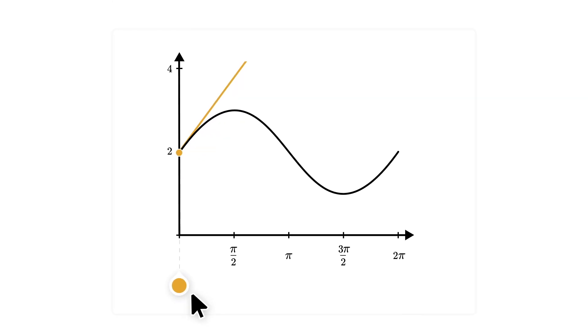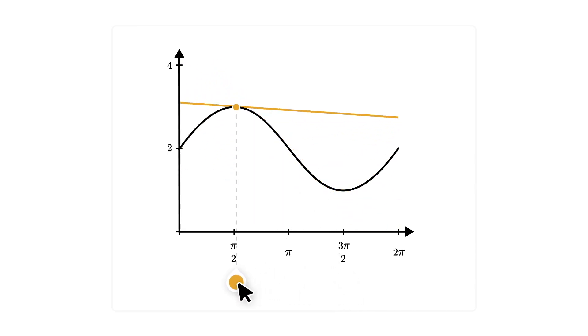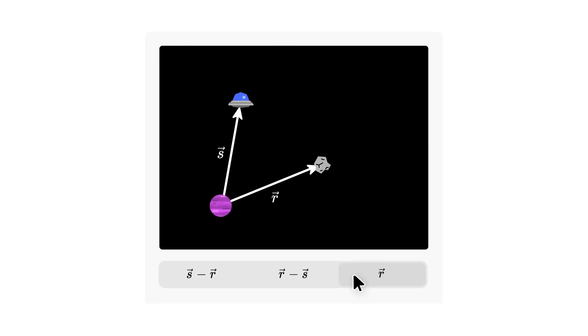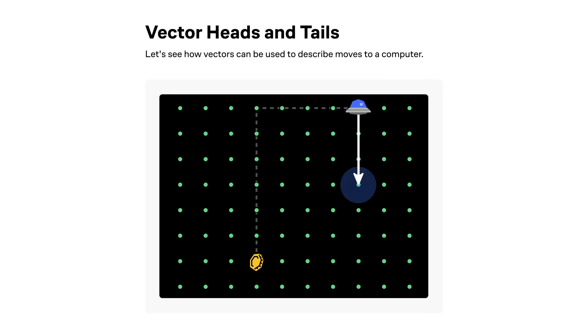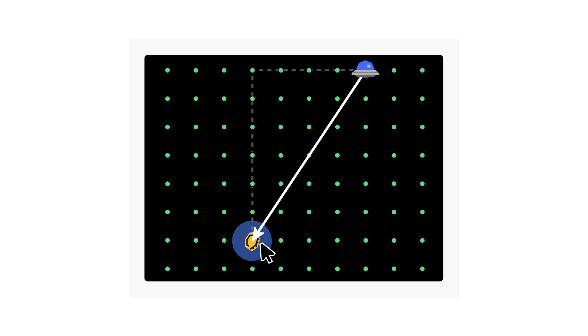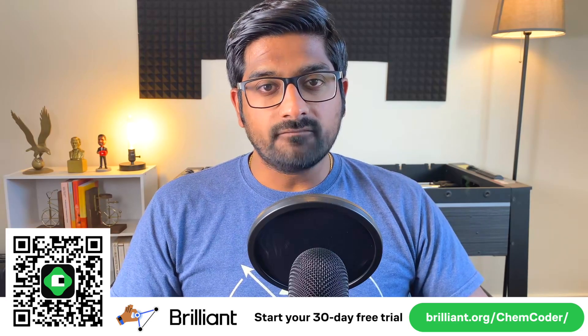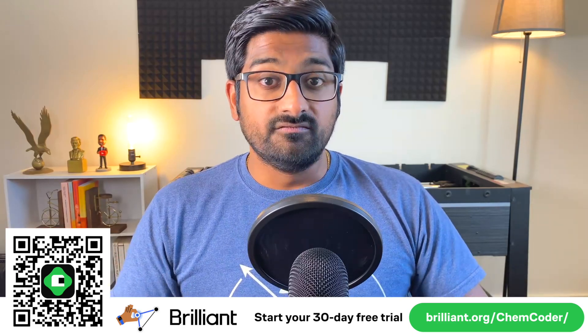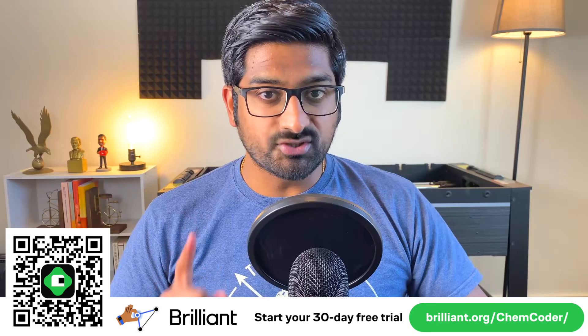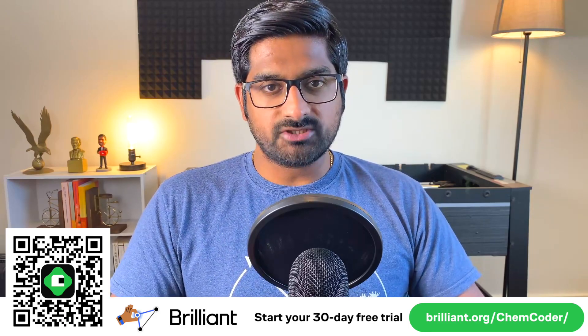Brilliant also has a comprehensive range of math courses for learners of any level. Whether you want to brush up on fundamentals or challenge yourself with advanced concepts, it helps you enhance your visual and spatial problem-solving skills. To try everything Brilliant has to offer free for 30 days, visit brilliant.org/chemcoder or click the link in the description. You'll also get 20% off an annual premium subscription.